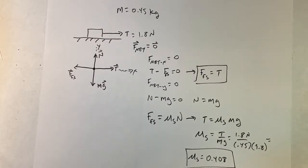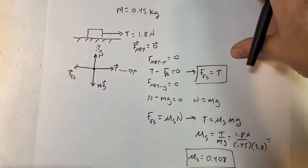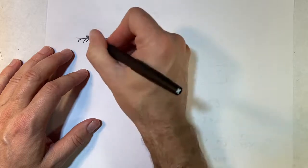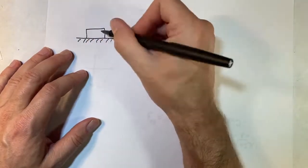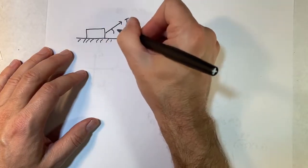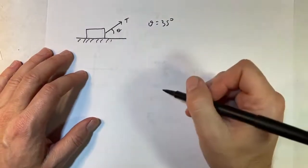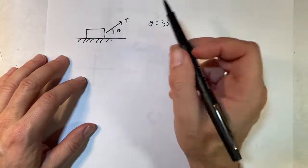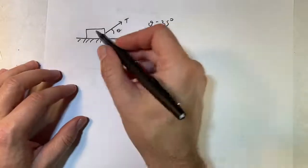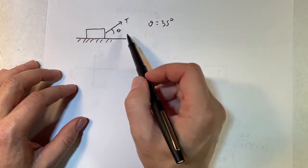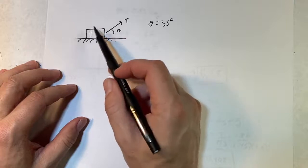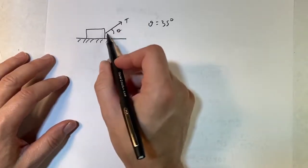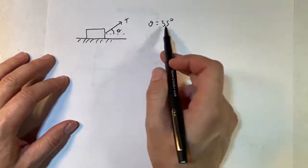Let's do it again with the same block. This time, what if I pull on it at some angle — tension at angle theta, and let's say theta equals 35 degrees. How hard would I have to pull to get it to move? Remember, before I pulled at 1.8 newtons. Would I have to pull harder or not? It's not obvious, because pulling at an angle means less horizontal pull, but it also reduces the normal force, so friction is less too. Two things are fighting each other.